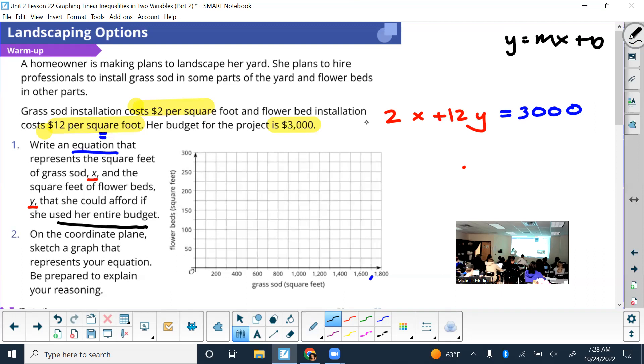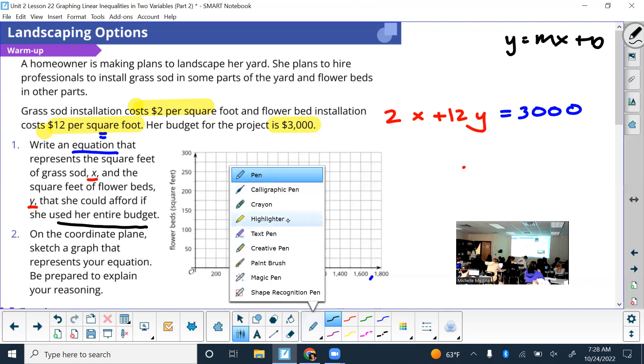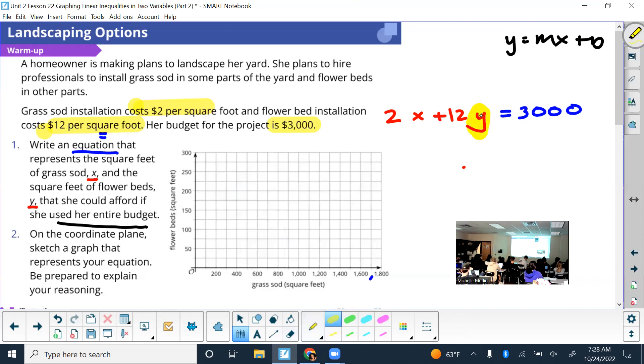To convert into y equals mx plus b, what needs to be alone? The y. So locate your y, follow the same steps as we did Friday or Thursday, whatever day, and isolate the y. So would we get rid of the 2x first or the 12 first?